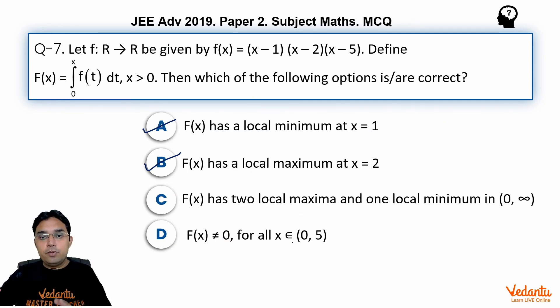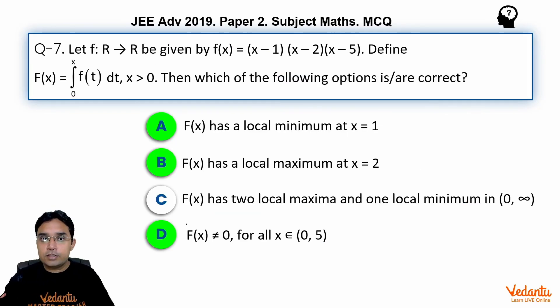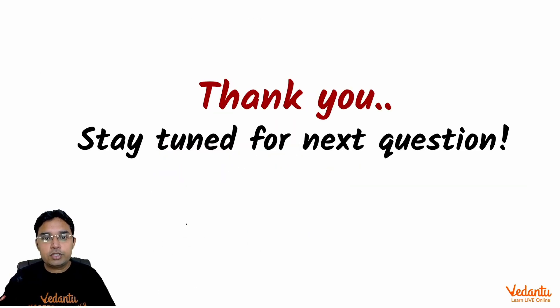I think this is what they are asking. Let us again read that option. So F(x) is not equal to zero for all x belongs to (0, 5). So D is also the correct option. So this completes my solution of this question. I hope you liked this solution. Thank you so much, stay tuned for next questions. Bye.